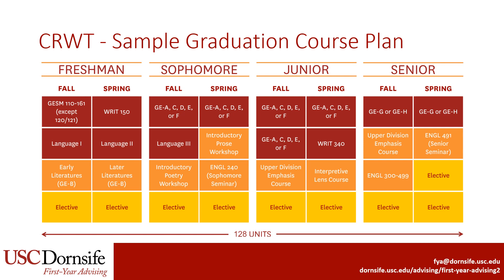This is a sample four-year course plan for the Creative Writing major. The dark red squares represent GE, writing, and language requirements that would stay the same regardless of what major you have in Dornsife. The orange squares represent your major courses. You do not need to complete these major courses in the specific order that they are listed, though we recommend taking your early literature course first and waiting until after your first semester to take upper division 300 and 400 level courses. Several of the early literature and later literature courses also fulfill the GEB requirement, so students will often take those courses to make progress in the GEs and their major at the same time.